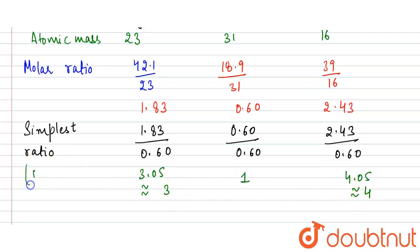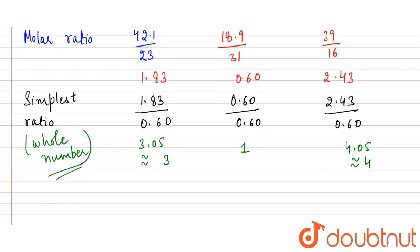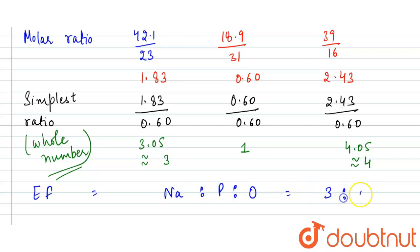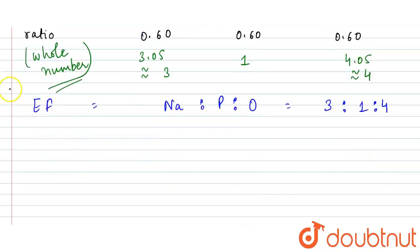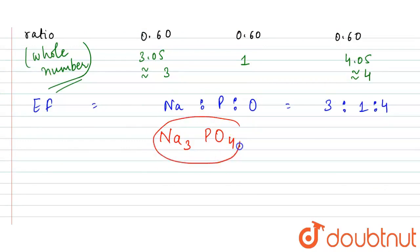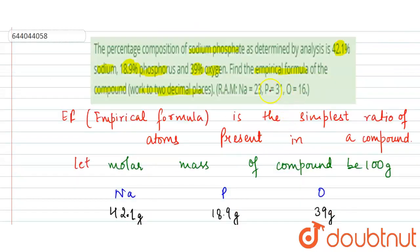We take 3 and 4 because we need whole number ratios. So the ratio of sodium to phosphorus to oxygen is 3 : 1 : 4. Therefore, the empirical formula is Na₃PO₄. This is our required answer.